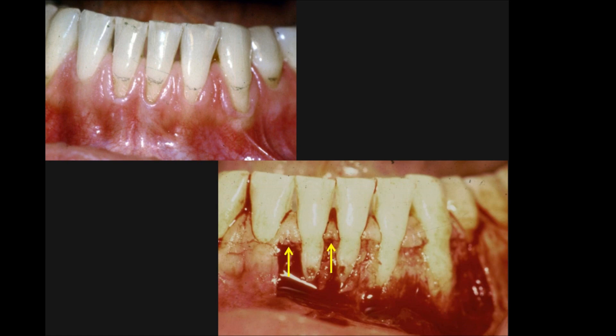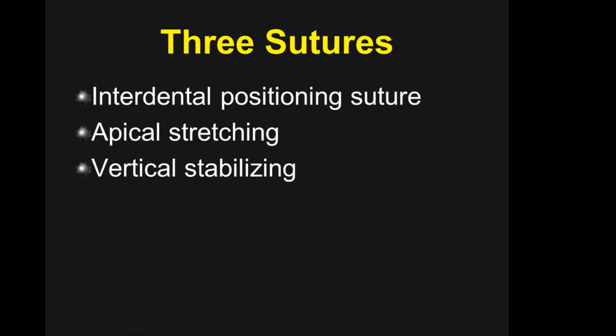Here we're grafting four teeth. Because we are doing such a large graft and going further apically, the potential for take is better. Holbrook and Oceanbeam, about the same time I was publishing, published their work on root coverage grafting with great emphasis on stabilizing the graft and stretching the vascular channels to get blood supply. After their article, I modified my suturing technique to incorporate those same principles.